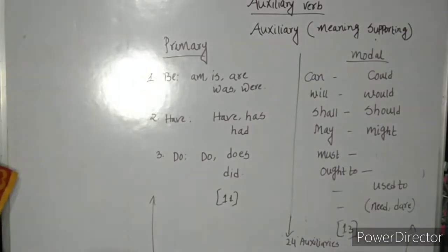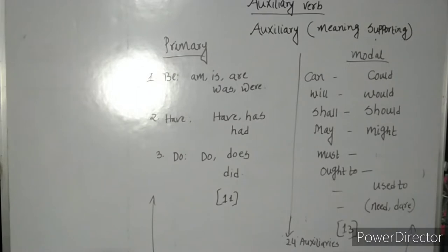The be verb has three forms in its present tense. They are am, is, are, and two forms in past tense: was, were.